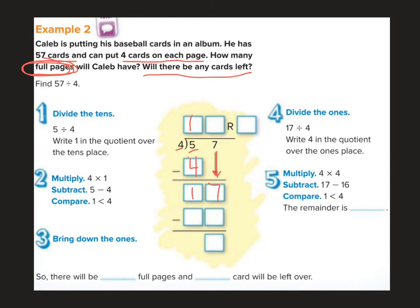Seventeen divided by four is four. Four times the number I just wrote down, four, is 16. Seventeen minus 16 is one. So there will be 14 — that's my quotient — and my remainder is one. There will be 14 full pages and one card will be left over. We can check: four times 14 is 56, then I would have one left over.